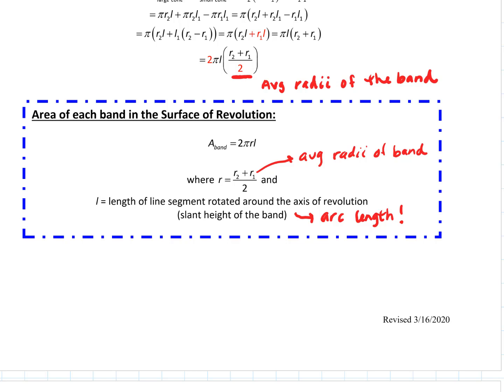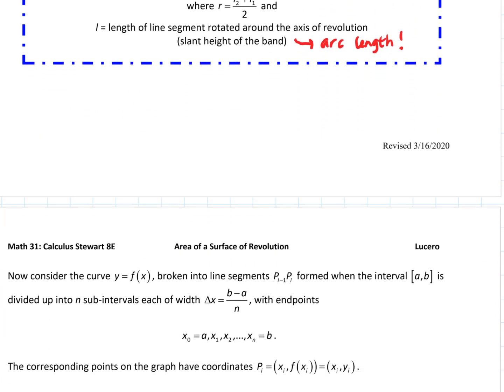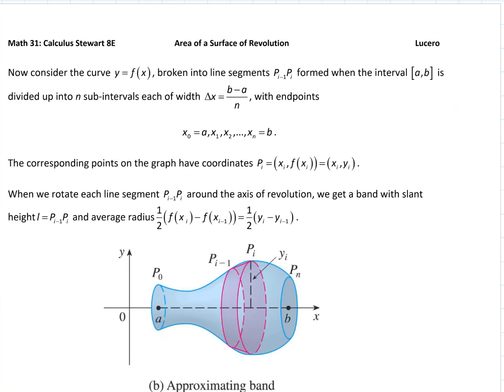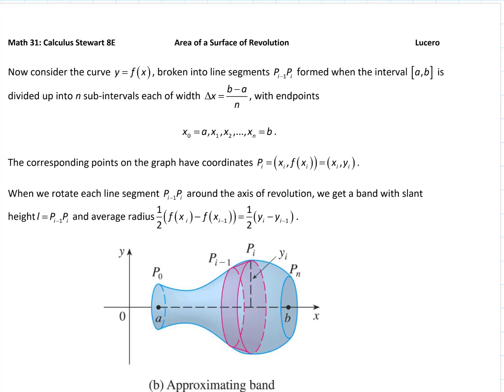Now that we've set up the area of the band — 2π times the average radius times the length of a line segment — we pull a few things together: geometric formulas plus what we did in 8.1. For our proof, we're going to look at a curve y equals f of x. The same proof could be done for x equals g of y, doing it for delta y rather than delta x, just with variables around the y-axis.